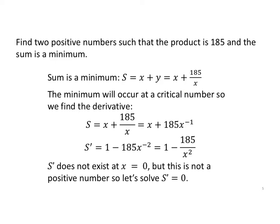The minimum will occur at a critical number, so we're going to find the derivative. First I rewrite S: x plus 185x to the negative 1. It's easier to find the derivative of this. The derivative of x is 1. The derivative of 185x to the negative 1 is negative 185x to the negative 2, and I'll rewrite it with positive exponents.